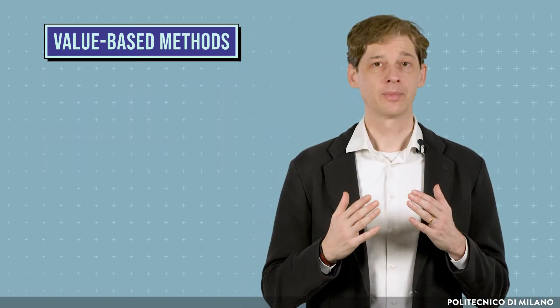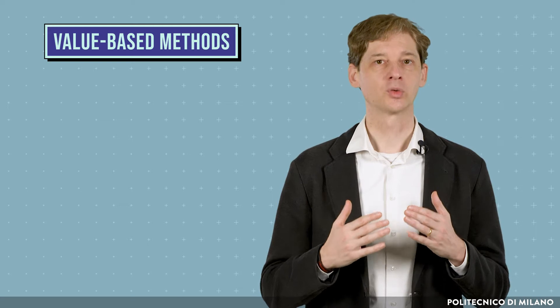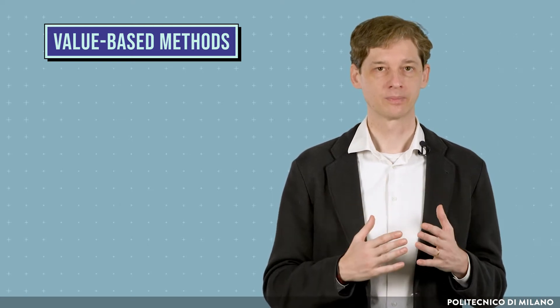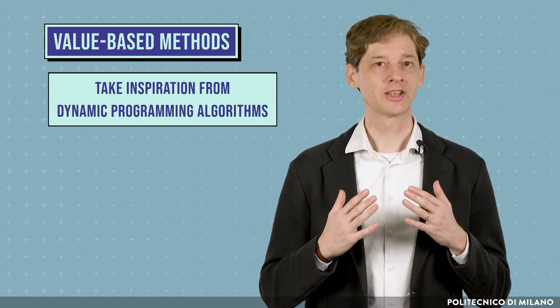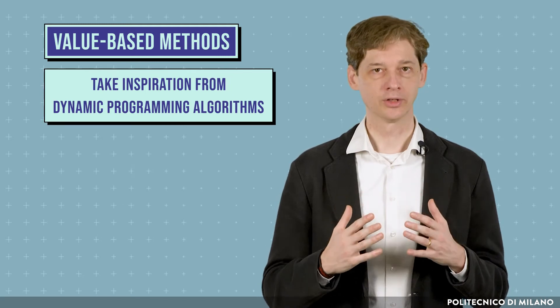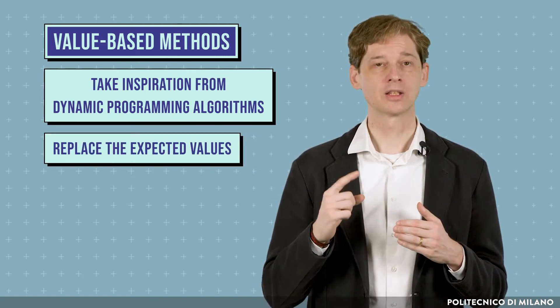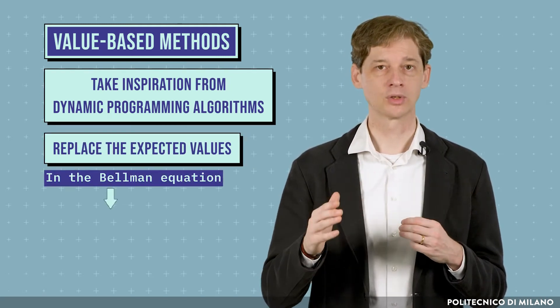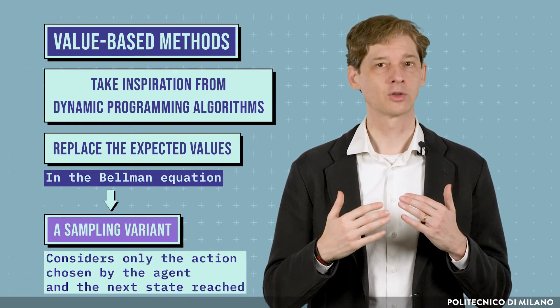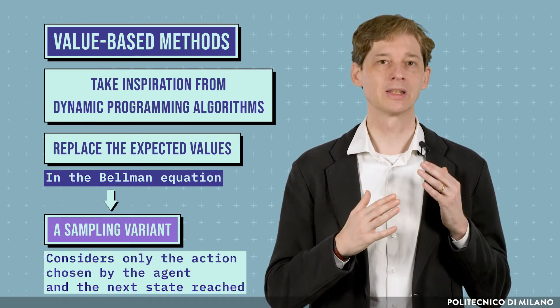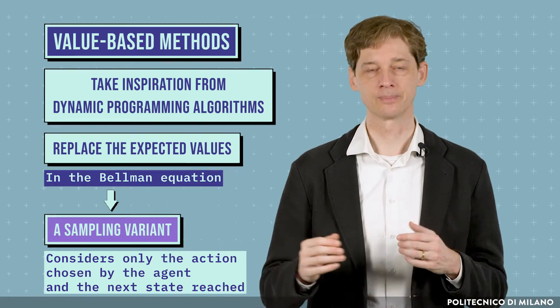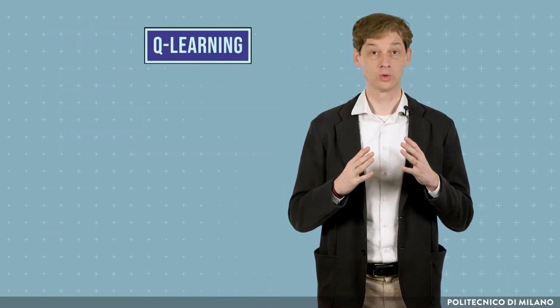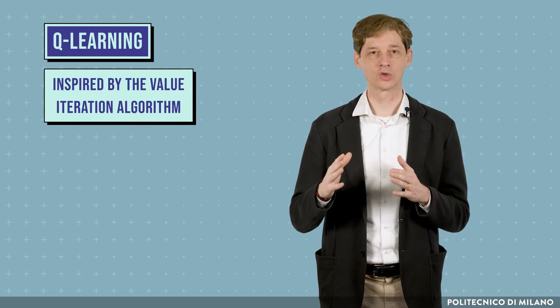Value-based methods use experienced samples to directly learn the optimal value function. This method takes inspiration from dynamic programming algorithms and replaces the expected values contained in the Bellman equation with a sampling variant that considers only the action chosen by the agent and the next state reached. In particular, Q-learning, one of the most popular reinforcement learning algorithms, is a model-free, value-based method that is inspired by the value iteration algorithm.